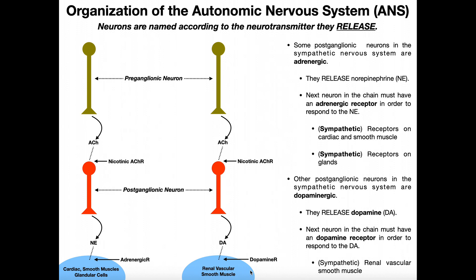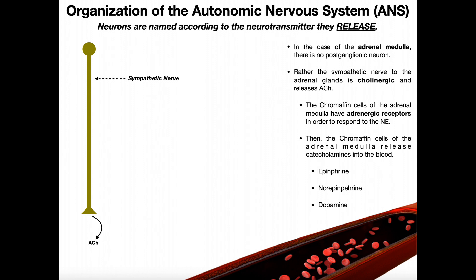Everything before the postganglionic neuron is the same — it doesn't matter if it's sympathetic or parasympathetic. The preganglionic neuron always releases acetylcholine, which always binds to a nicotinic receptor on the postganglionic neuron. From there, it differs. There is, however, unfortunately one exception — but this exception isn't too bad because it's only one case and it's really not terribly difficult to remember.